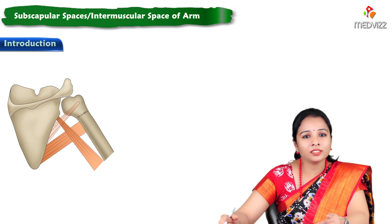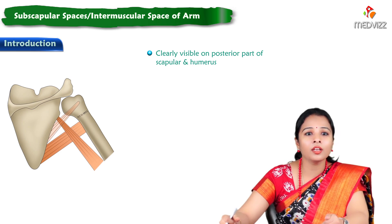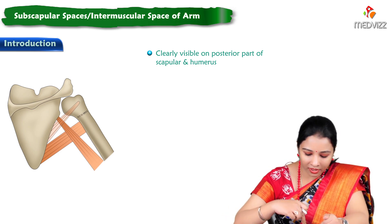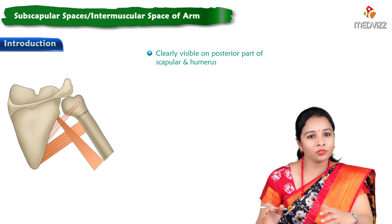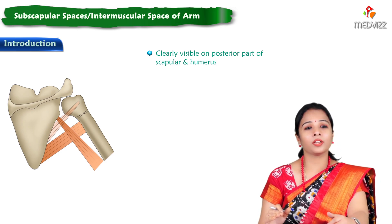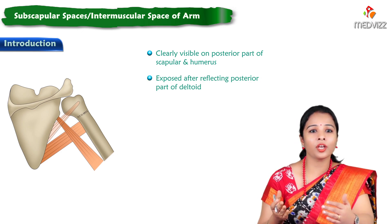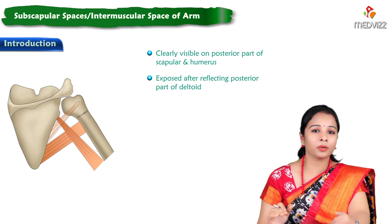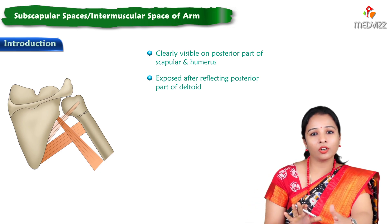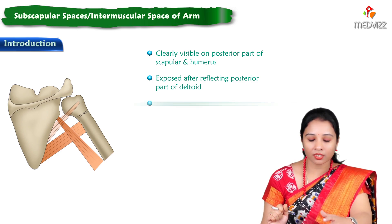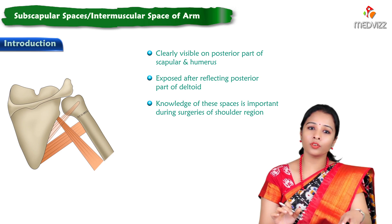Intermuscular spaces are clearly visible on the posterior aspect of the scapula and the humerus. Here we can see a schematic picture showing the intermuscular spaces from the posterior view of the scapula and humerus. During dissection, you have to reflect the posterior part of the deltoid to expose these spaces. The knowledge of these spaces is important during surgeries of the shoulder region.